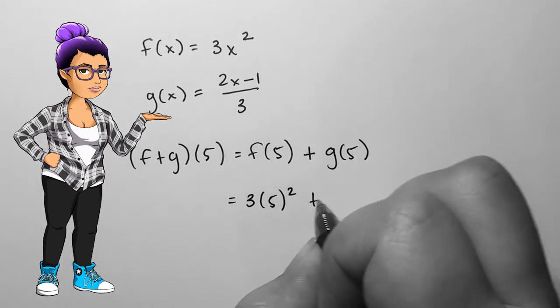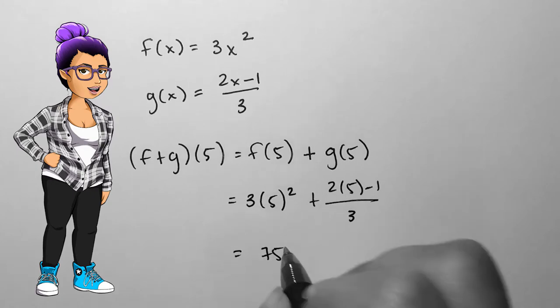f of 5 will be 75 and g of 5 will be 3, so f plus g evaluated at 5 is equal to 78.